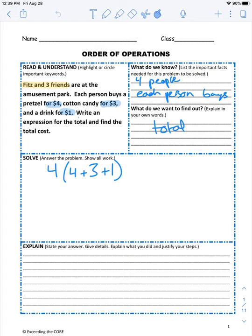So now we have our expression set up. Now we can solve. I see the parentheses — we're going to do parentheses first. We have four plus three plus one, which is eight. So if I simplify this one more step, I have eight.